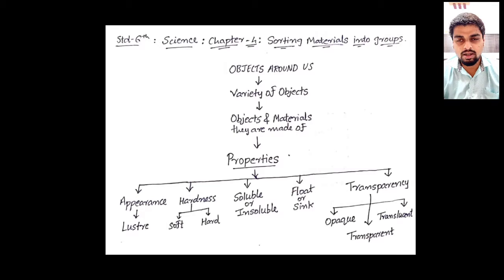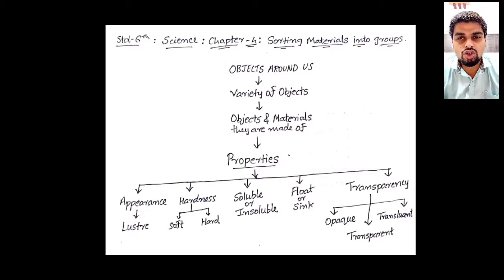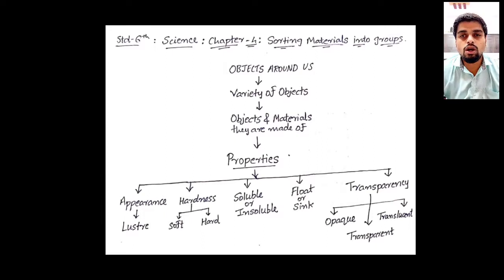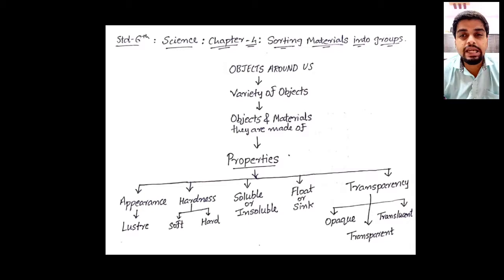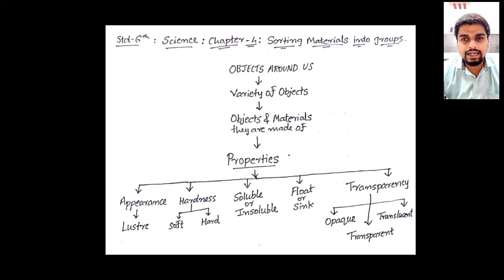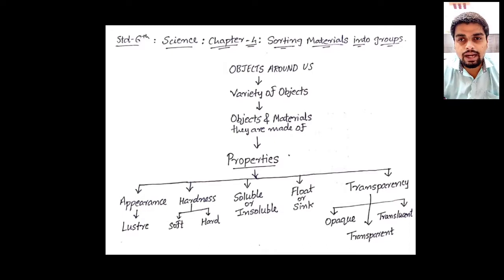The main and important topic of this chapter is the different properties of objects and materials, which we are going to learn in detail. The first property is appearance — how an object looks — in which we are going to study the concept of luster. We will see that in detail while explaining the chapter.